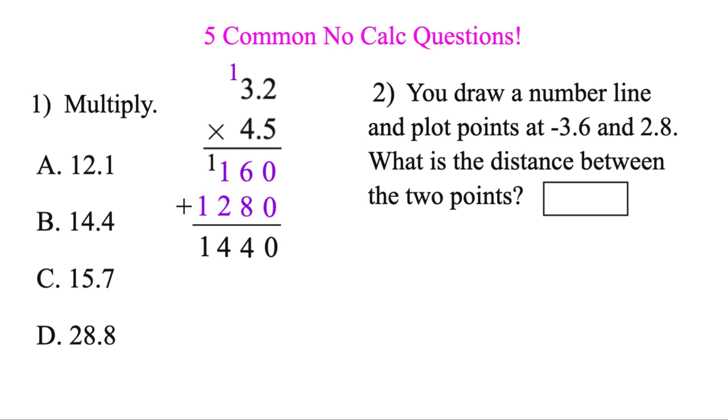At the end is when you're going to deal with the decimals. You just count how many you have. You've got 1 there, 1 there, for a total of 2. Counting 2 from right to left, and boom, right there. So final answer, 14.4. Okay, let's do another one.